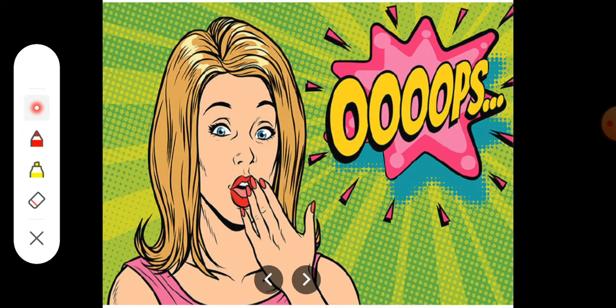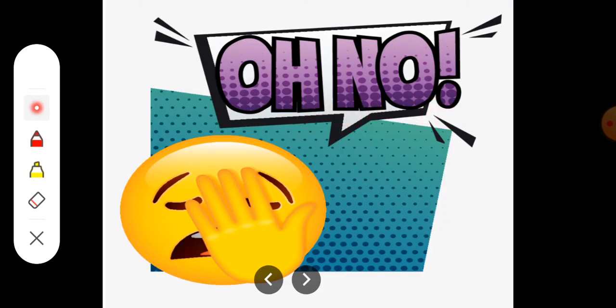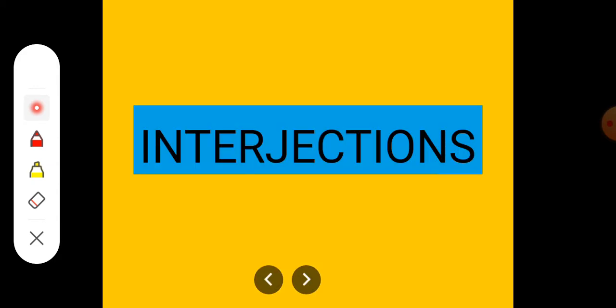So students, these words like oops, wow, oh no, hooray, these words are called intersections. An intersection is a word that express some sudden feelings or emotions.